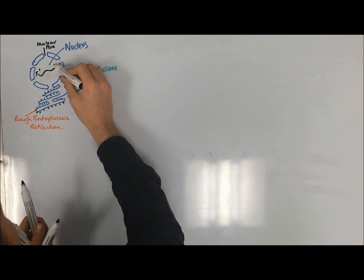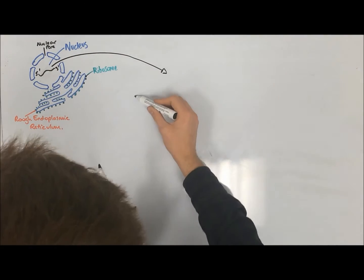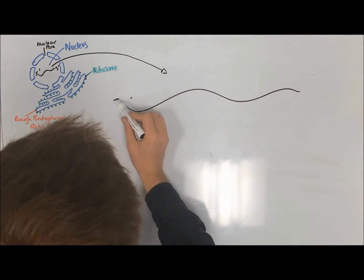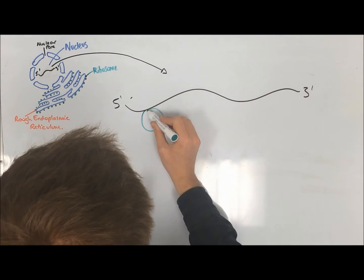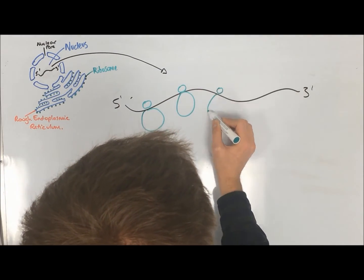mRNA transcribed from the nucleus gets exported into the cytosol through a nuclear pore, and when it comes into contact with and binds to one of the ribosomes, the process of translation can begin.